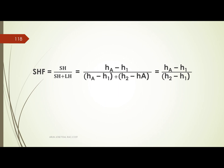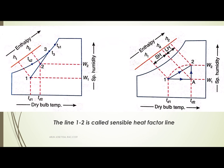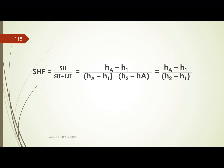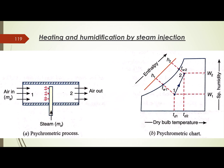Humidification by steam injection uses high-temperature steam to add moisture to the air, increasing the moisture content in terms of specific humidity. We use steam or a steam spray for this process. The inlet condition is labeled 1 and the exit condition is labeled 2.